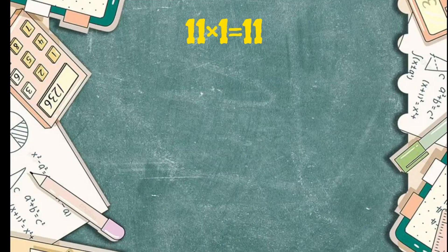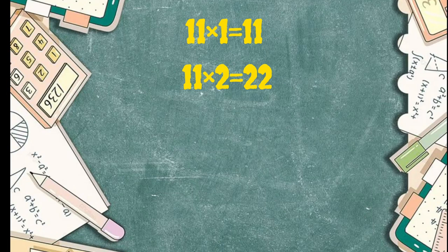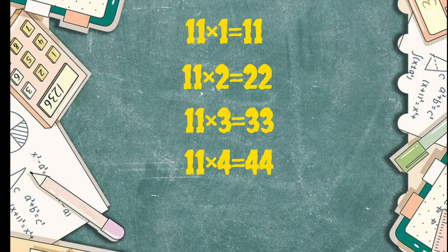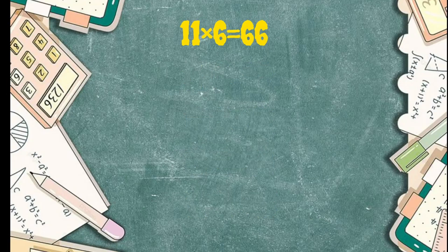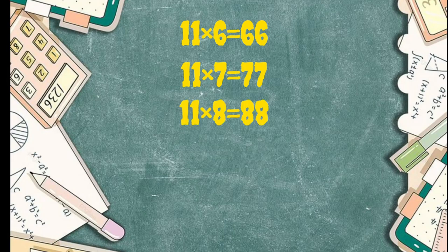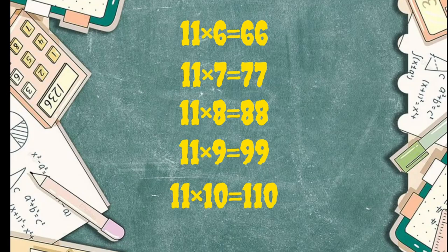11 1's are 11. 11 2's are 22. 11 3's are 33. 11 4's are 44. 11 5's are 55. 11 6's are 66. 11 7's are 77. 11 8's are 88. 11 9's are 99. 11 10's are 110.